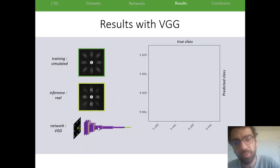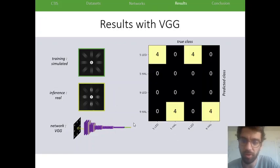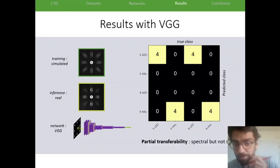So when we used the standard network, the VGG one, the results were like so. This is a confusion matrix where the true class is in x-axis and the predicted class in y-axis. And we can see that on the 16 real images, there was some partial transferability as the network was able to detect whether the image was coming from a halogen lamp or from a LED lamp, but it couldn't distinguish between the different numbers 5 or 9.